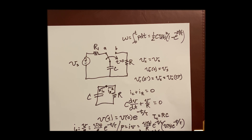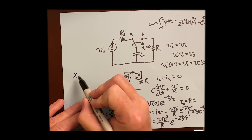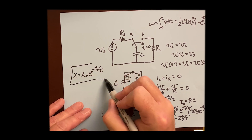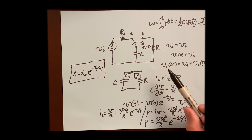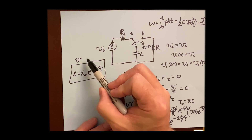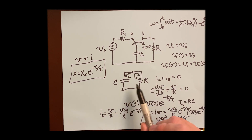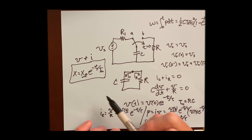To solve an RC circuit: find the initial voltage, figure out tau, and then write the equation for V or I. It will always look like X equals X-naught times e to the negative t over tau, where X-naught is the initial value. That's the general solution for the natural response of any RC circuit. It's also very similar to the response for an RL circuit. It only applies to voltage and current, not to power or energy. With one capacitor and one resistor, you just find those two values and plug them in.